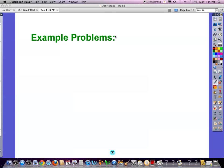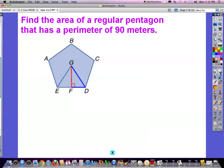Now we're on to our example problems, Section 11.3. Find the area of a regular pentagon that has a perimeter of 90 meters. What's important for the area of any regular polygon? One-half a p.